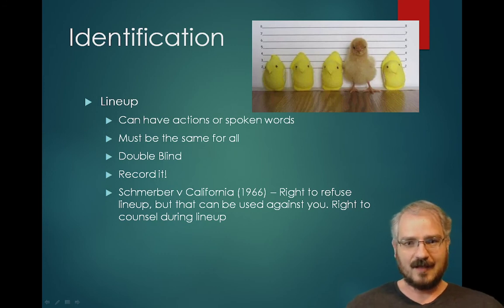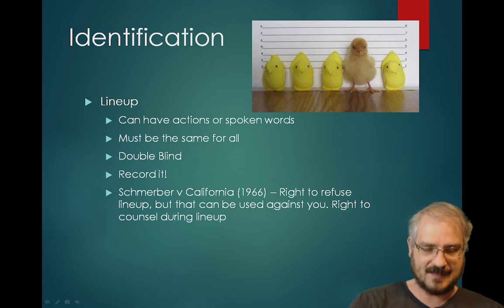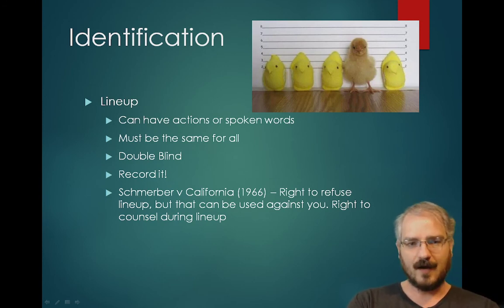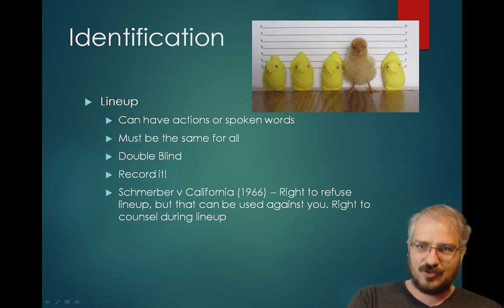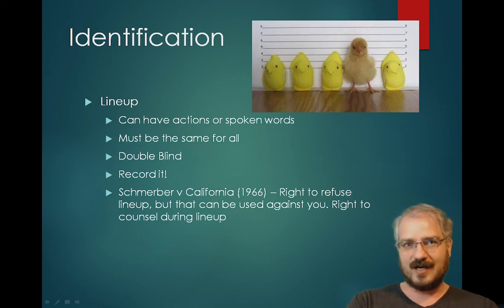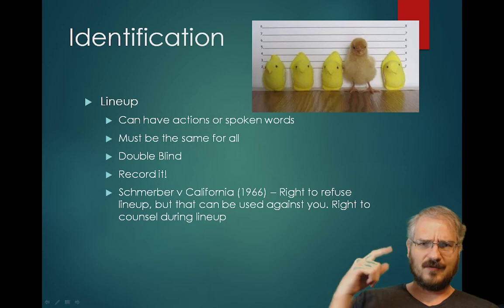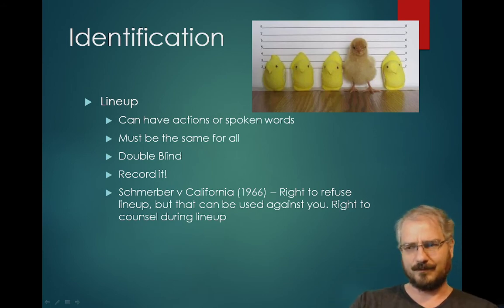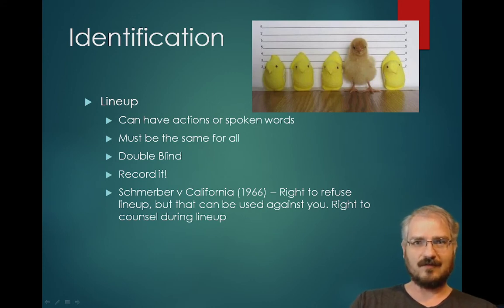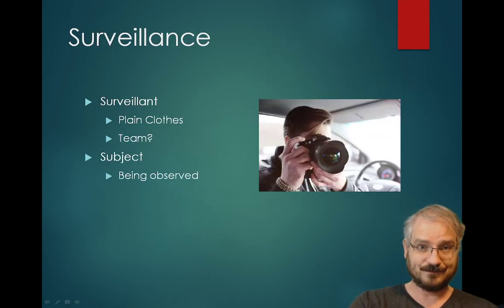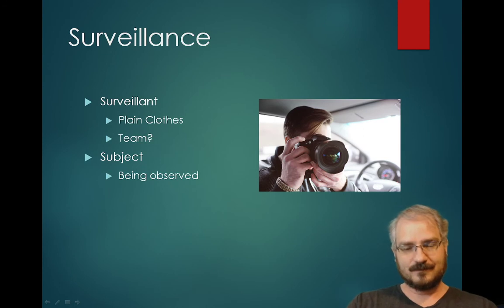In Schmerber v. California (1966), the Supreme Court held that a suspect has the right to refuse to participate in a lineup, but the prosecution can use that refusal against them in court — telling the jury the defendant was so scared of being identified that he refused. You also have the right to have your attorney present during a lineup, and police must honor that request.